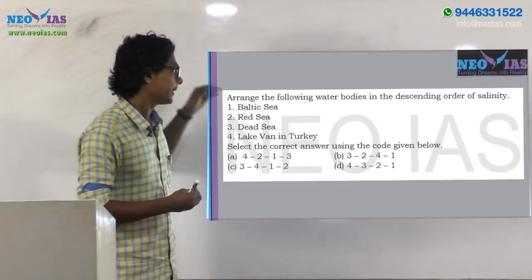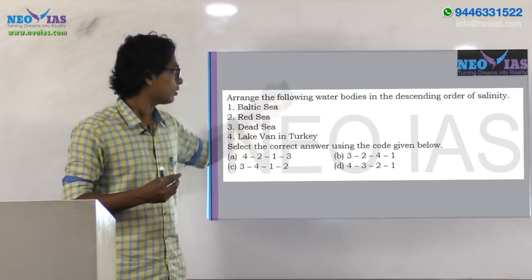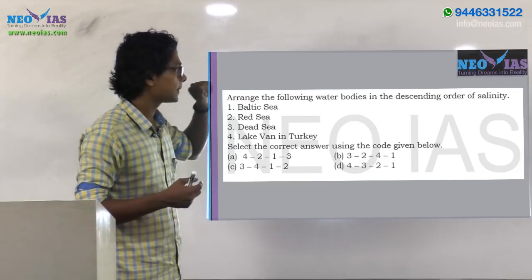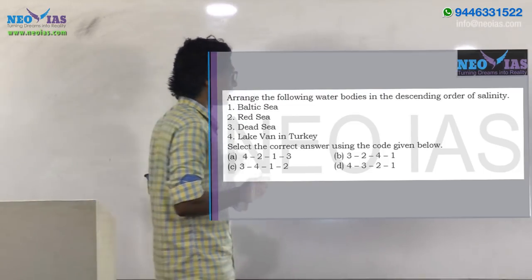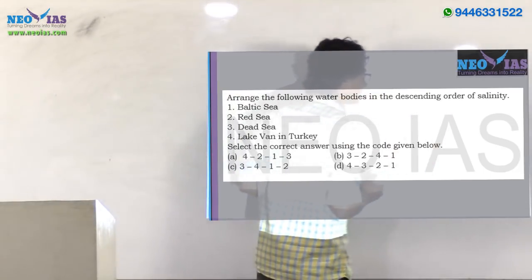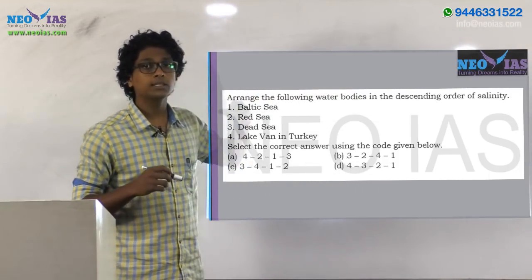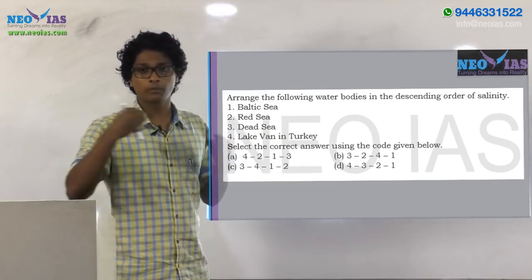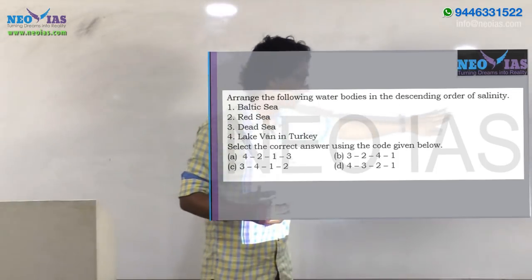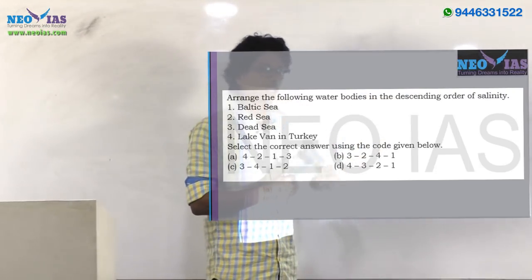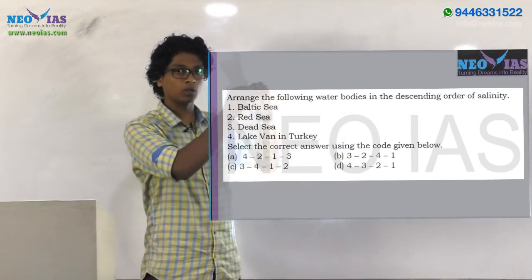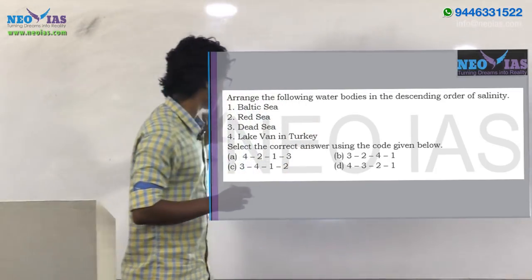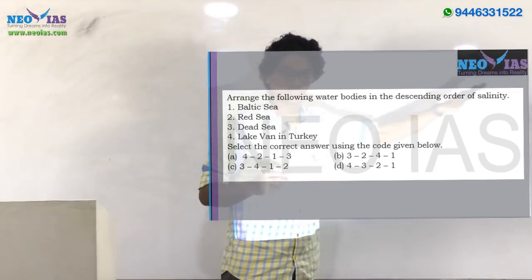This model question is related to the salinity of water bodies. The question asks to arrange the following water bodies in descending order of salinity. Descending order means the water body with higher salinity comes first and lower salinity comes last. If it were ascending, the lowest would come first. Before going to the answer, let's discuss salinity.